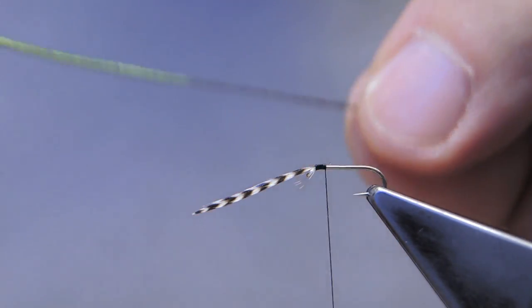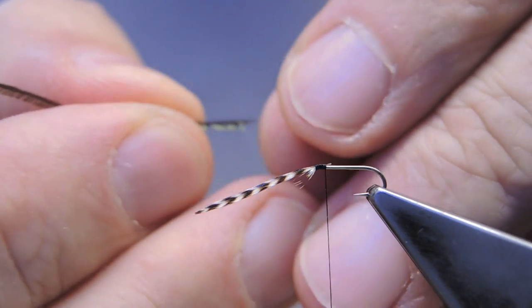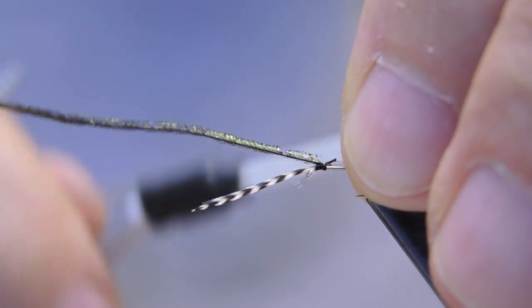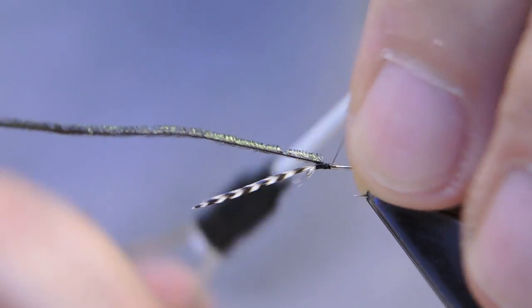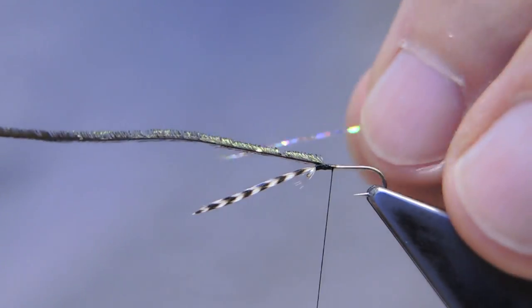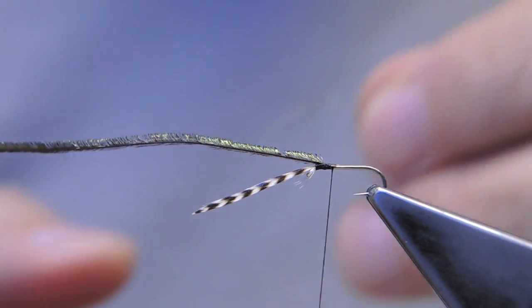The next material is a fine peacock hurl. Tied in, facing over the eye. And thirdly, some fine silver flash, or tinsel.